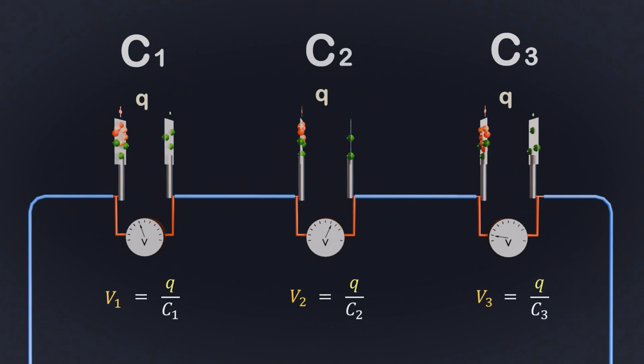Thus, in a series connection, the total voltage, V, is the sum of individual voltages, V equals V1 plus V2 plus V3. And here this V is the voltage, or potential difference, of a battery.